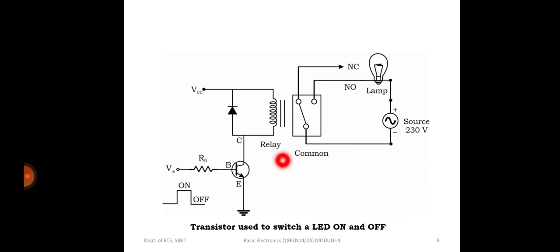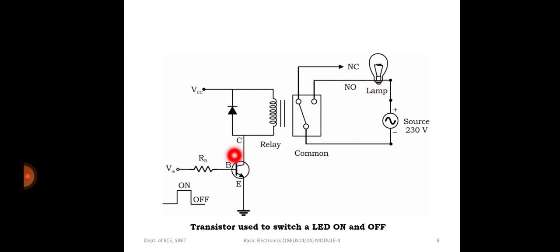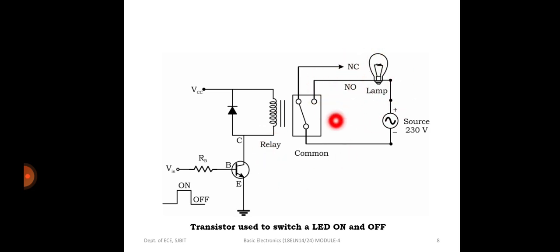Similarly, when a lamp is connected in the circuit, whenever the input Vin equals zero, the transistor is in the cutoff region, there is no current flow, and the lamp does not glow. When there is a transition from zero to one, the transistor saturates and current flows, turning on the lamp. This is how the transistor can be used as a switch to turn an LED or lamp on and off.